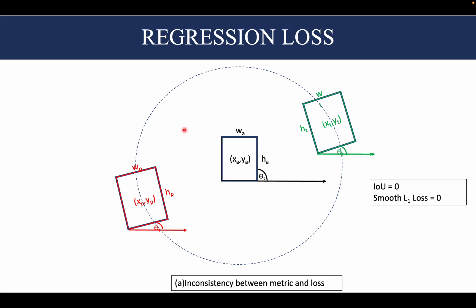Let us now see what are the problems with the regression loss that we had defined for rotated object detection in just the previous video.